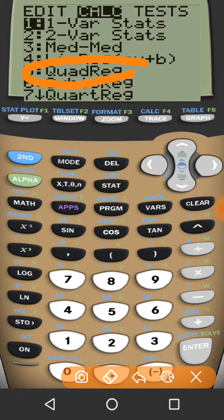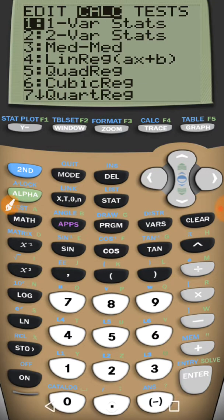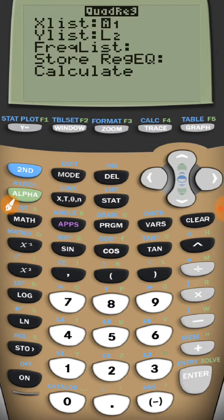And I'm now going to press Graph. And when I press Graph, notice I have something that looks kind of like a parabola. So I want to see, well, what is the equation for that parabola?